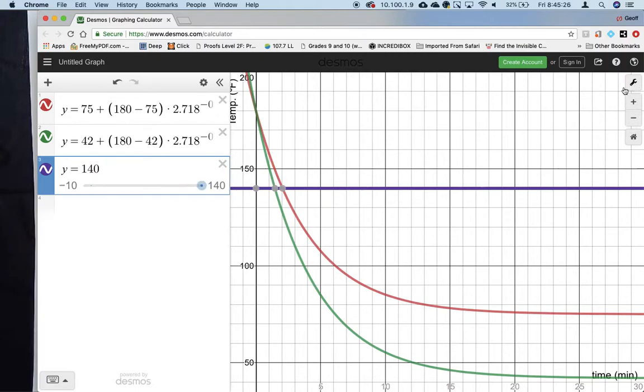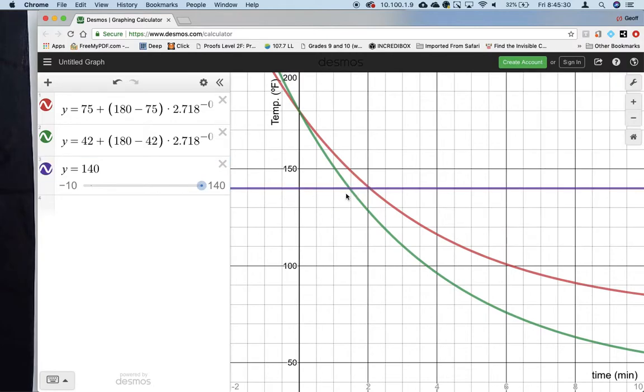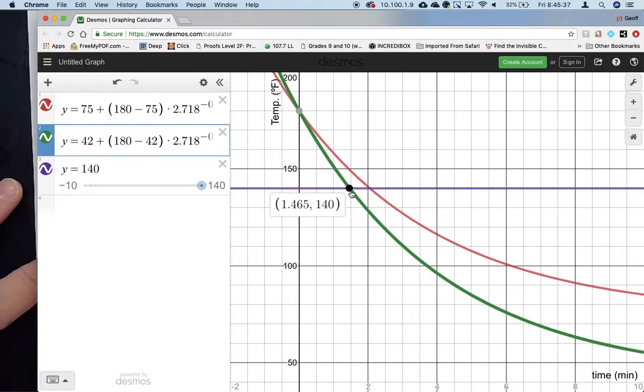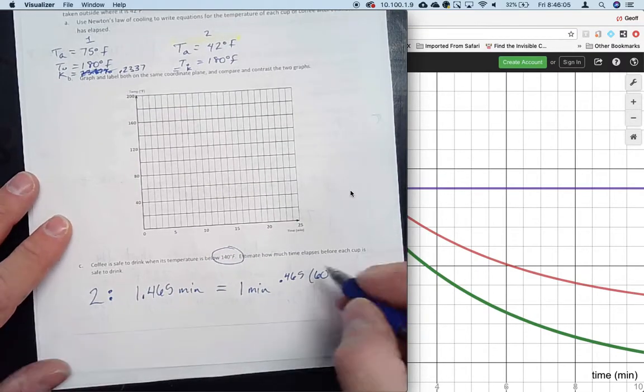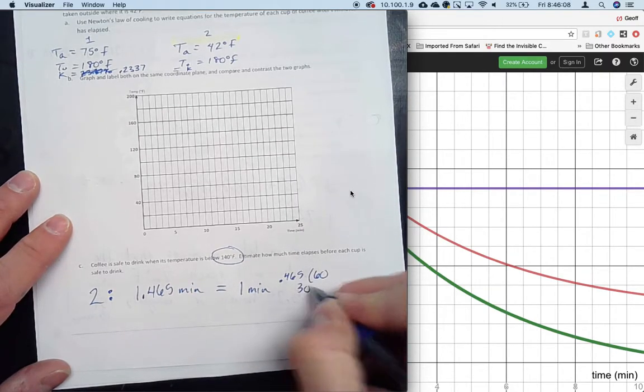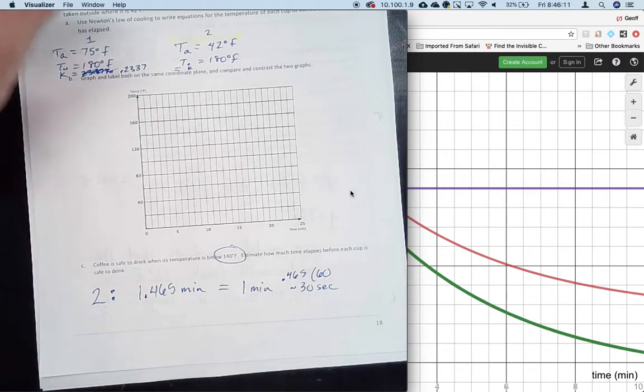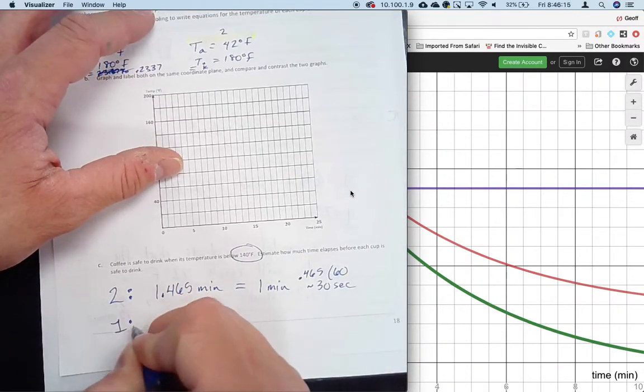I'm gonna go back to Desmos, add a third line: Y equals 140. Check it out, I don't even need to go all the way out this far. I'm just gonna go to like 10 minutes. The green line is the coffee cup taken outside. It's safe to drink after 1.465 minutes.